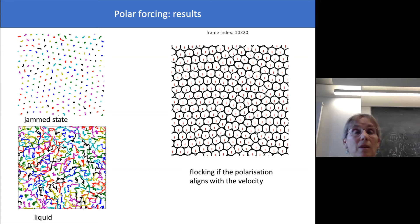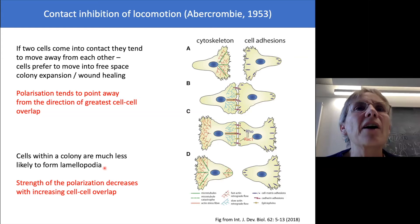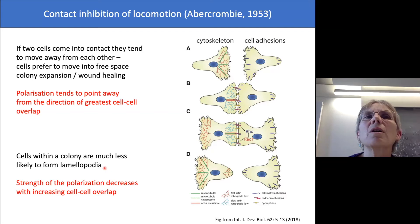And actually, if we thought about it, it sort of makes sense that it doesn't work. And that's because of contact inhibition of locomotion, which says that if you have cells in a colony, you don't get lamellipodia. The cells don't want to go anywhere. They don't form polar forces, forces which just pull them in a certain direction.